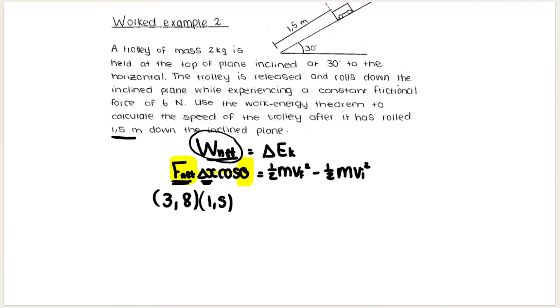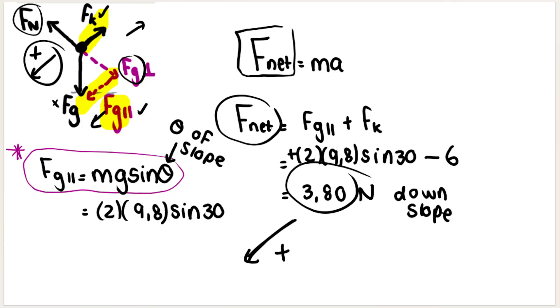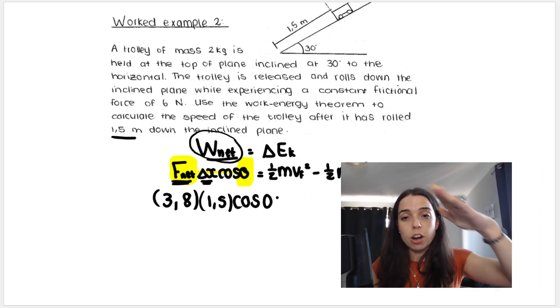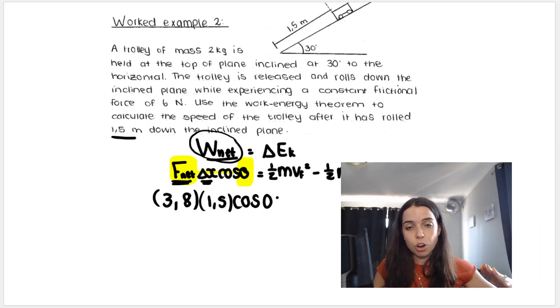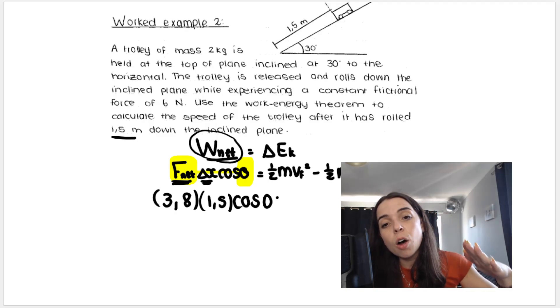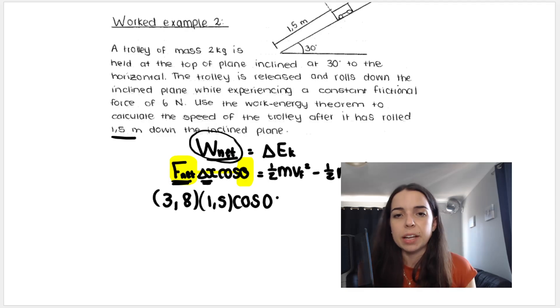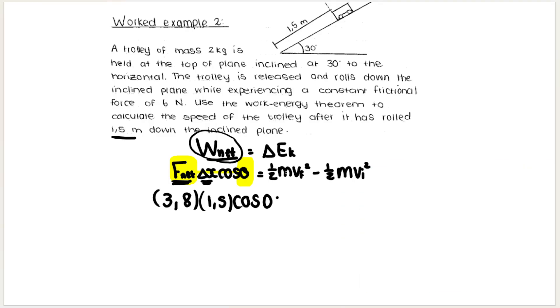Remember we discussed that the net force is going down the slope, but the box, the object, the trolley, whatever, the car, is also moving down the slope, so they have no angle between them - zero angle. The angle between them is zero degrees. This confuses students, but the trolley is moving down the slope, the net force is acting down the slope, there's no angle between them. It's not like the net force is going this way but the trolley is moving this way or something like that.